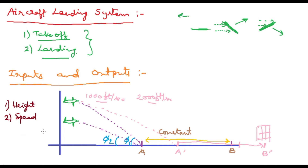So now we can declare that height and speed are the two basic input parameters. What we are trying to obtain every time is the angle — so the angle is the output. Based on height and speed, we decide the angle such that the flight reaches point A and travels up to point B. The inputs are height and speed, and the output is the angle — this is the basic concept of the aircraft landing system.